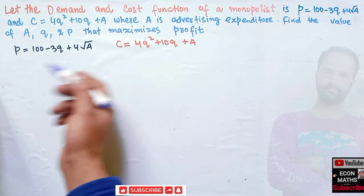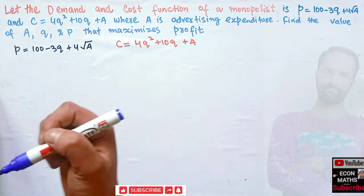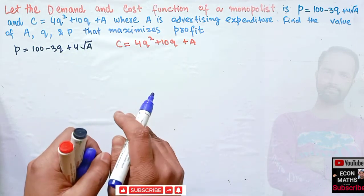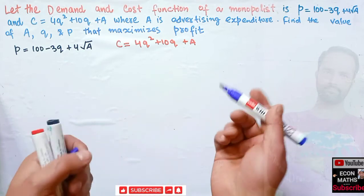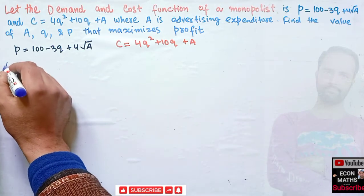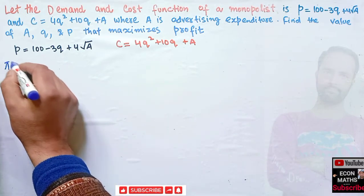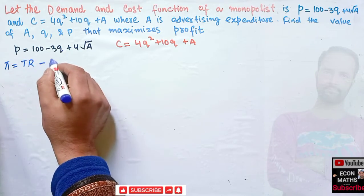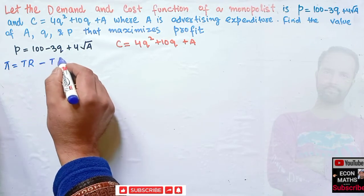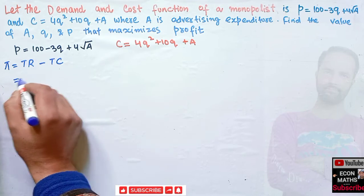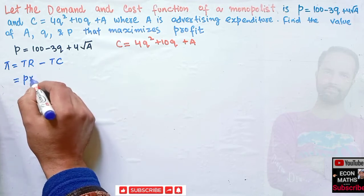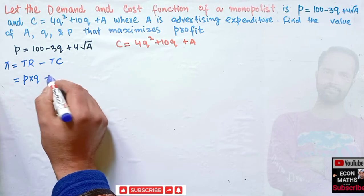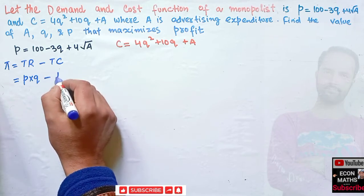We have the inverse demand function and the cost function. The first step will be to find out the profit. We know profit equals total revenue minus total cost. What is total revenue? Price multiplied by output gives us total revenue, minus total cost.